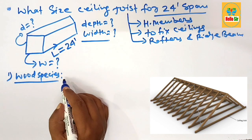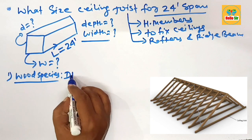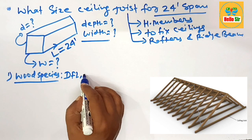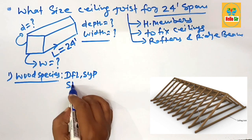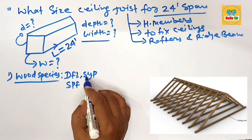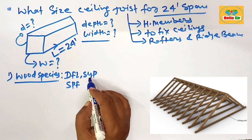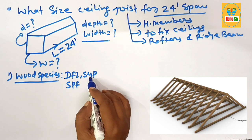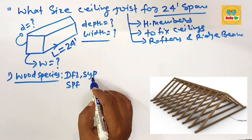Common wood species include DFL, SYP, and SPF. SYP — Southern Yellow Pine — is the strongest wood species and can span more distance compared to other species.